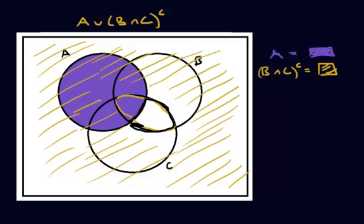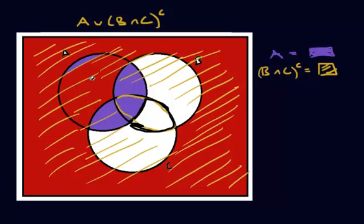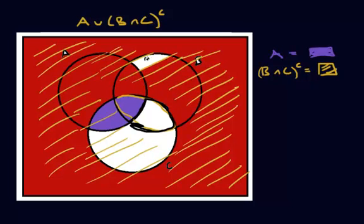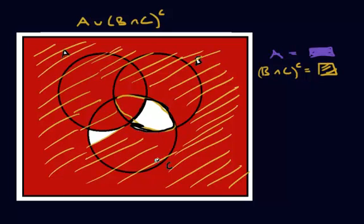So our final answer is everything that's shaded except for one small region — that's the only part that hasn't been shaded, so that's the only part that doesn't count. Everything else counts. I'm going to take red and shade in everything except for that region. The final answer is the red region.